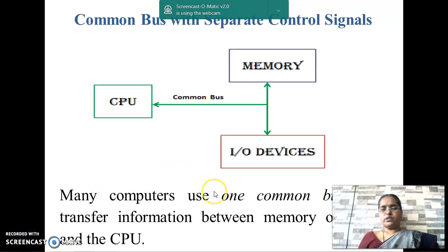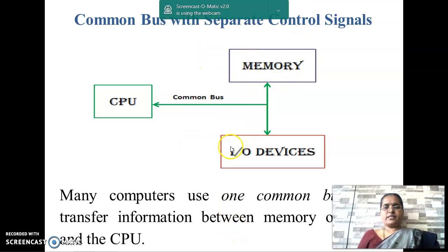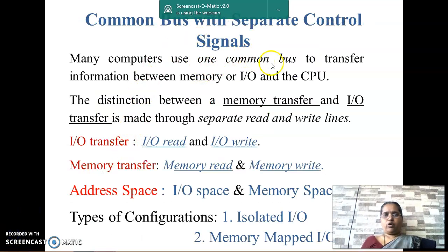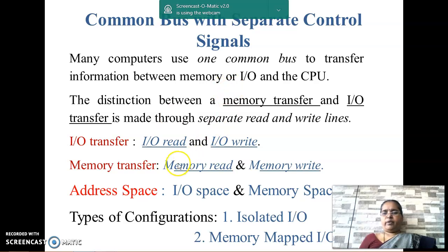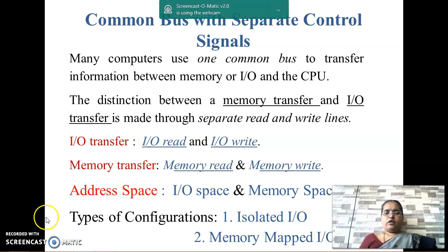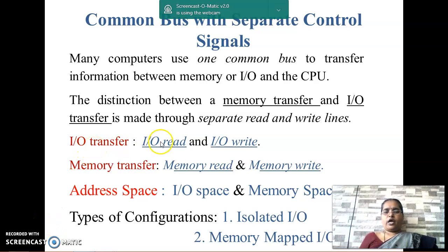Many computers use the second type of configuration, that is, one common bus with different control signals. This diagram represents one common bus that is used to connect both memory and IO devices with the CPU. Since computers use one common bus, it is necessary to distinguish the data transferred between the memory and IO devices. This distinction is made by using separate read and write lines. For IO transfer, the signals used are IO read and IO write. For memory transfer, the signals used are memory read and memory write.